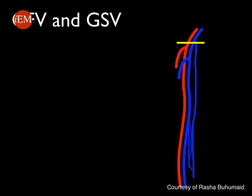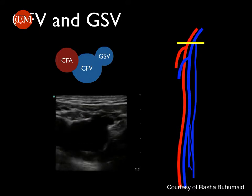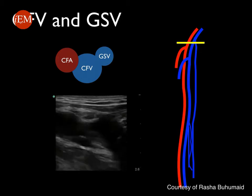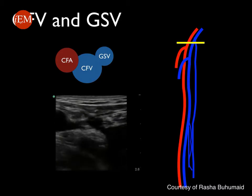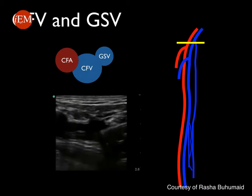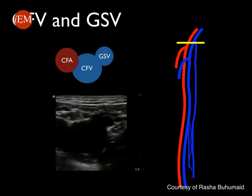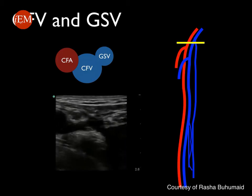At the level of the common femoral vein and greater saphenous vein, the vein lies medial to the artery, producing what is known as the Mickey Mouse sign. You will see the greater saphenous vein draining into the common femoral vein medially, with the common femoral artery located laterally. The venous system is compressible under probe pressure while the artery remains non-compressible, which is normal.